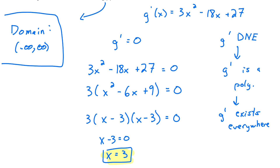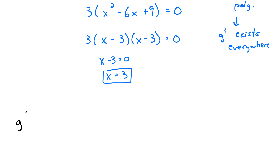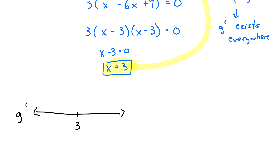Once we find our critical numbers, we construct our number line. Here we have g prime, and the critical number we found was 3. Above that 3, I'll note why x equals 3 was important — we found it by taking the derivative and setting it equal to 0. So right above the 3, I'll put a little 0 to indicate that g prime equals 0 at this x value, which would be helpful if we were sketching the graph.